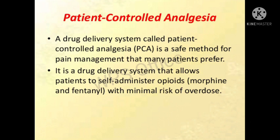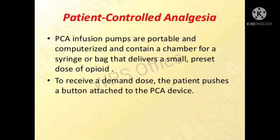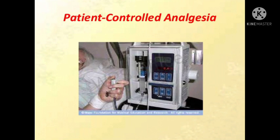Next is patient-controlled analgesia (PCA). This is a type of drug delivery system that allows the patient to self-administer opioids such as morphine or fentanyl with minimal risk of overdose. The infusion pumps are portable and computerized, containing a chamber for a syringe or bag that delivers a small preset dose of opioids. The patient can push the button at any time to receive a demand dose — this is the main advantage of PCA.